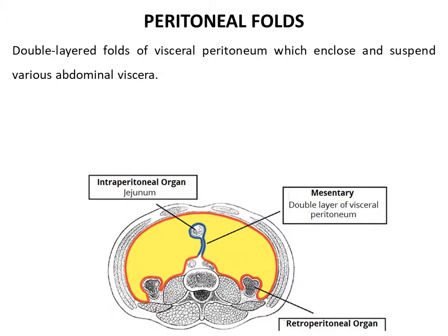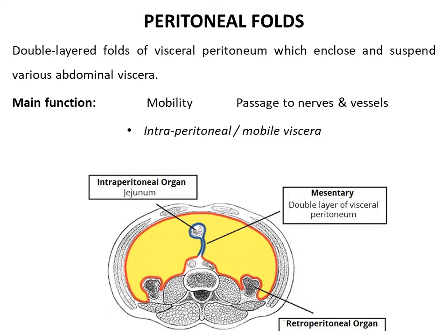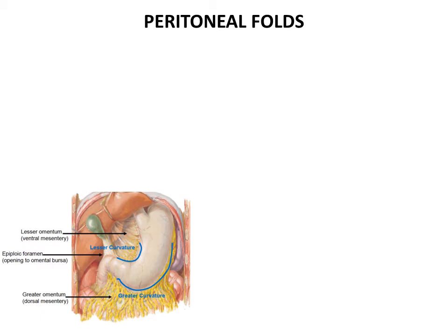These are known as peritoneal folds. They mainly provide motility to the viscera and also provide a pathway for the passage of nerves and vessels. Organs which are suspended by folds of peritoneum and covered by peritoneum on all sides are called intraperitoneal or mobile viscera, while organs which rest directly on the posterior abdominal wall and are covered by peritoneum only on one side are known as retroperitoneal or fixed viscera.